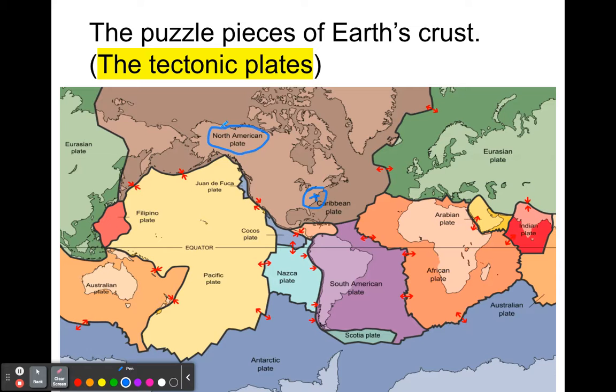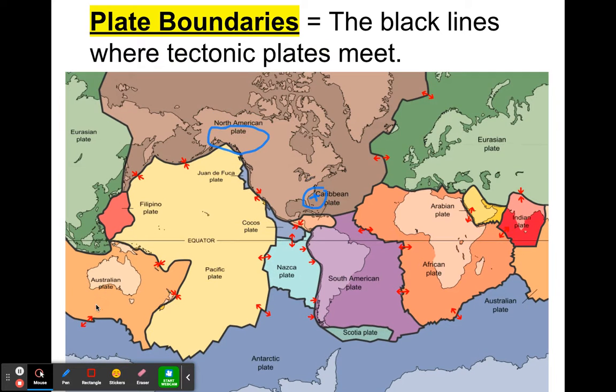That includes North America and kind of that whole general area. There's a bunch of different ones. You can kind of check out the map to see what those are. But those are the tectonic plates of the crust. Now, besides the tectonic plates, we also have where these plates meet. So the black lines on the diagram, you can kind of see them.